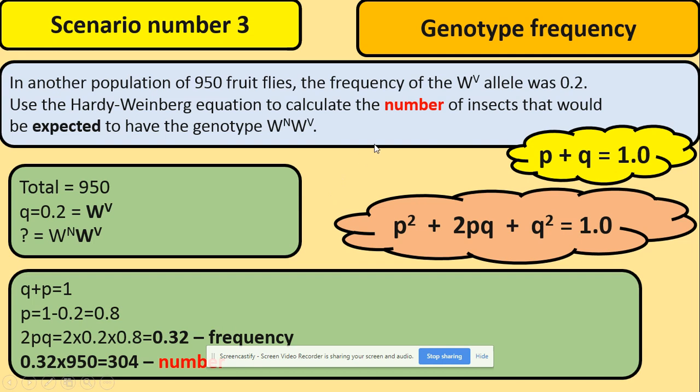But that's the frequency. If that was the question about frequency, that would be your answer. But they want a number. So what do we need to do with this frequency? Multiply by the total number of fruit flies. So the answer is 304.